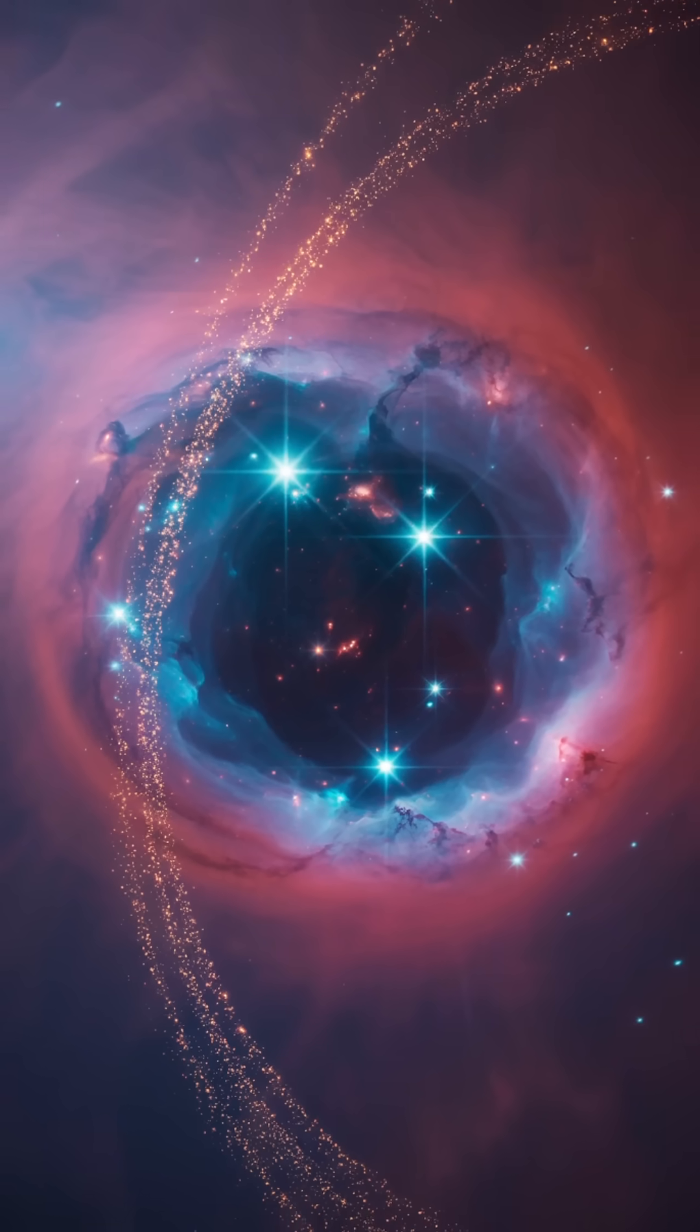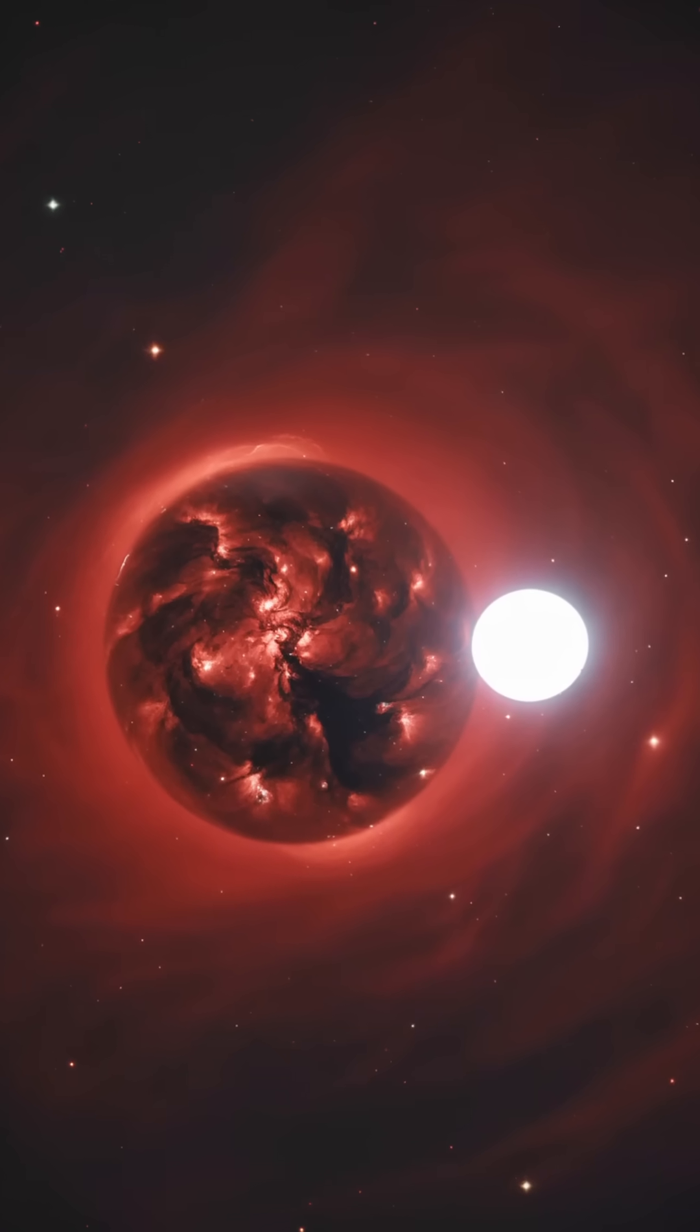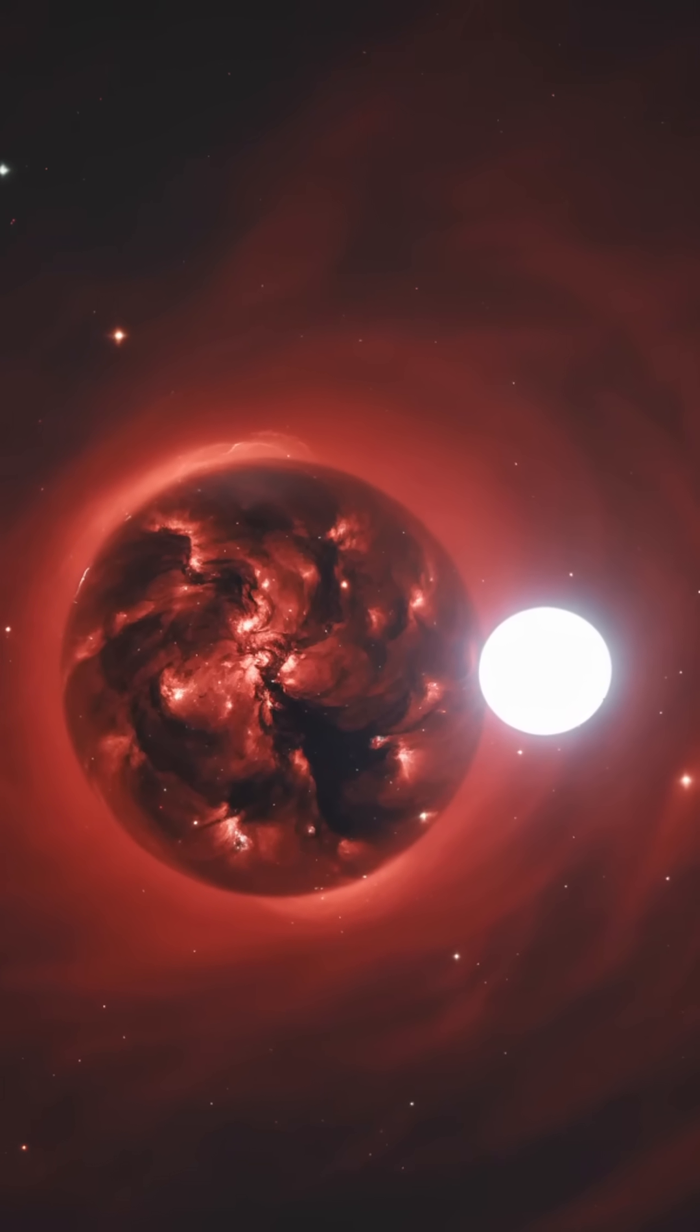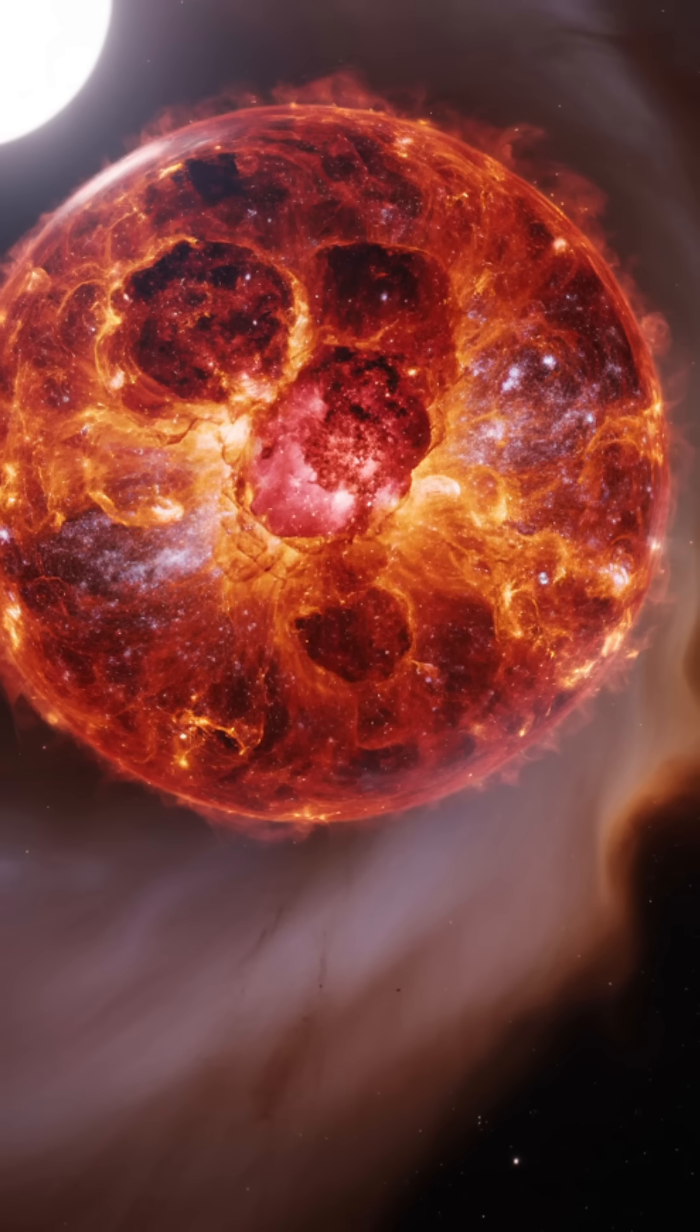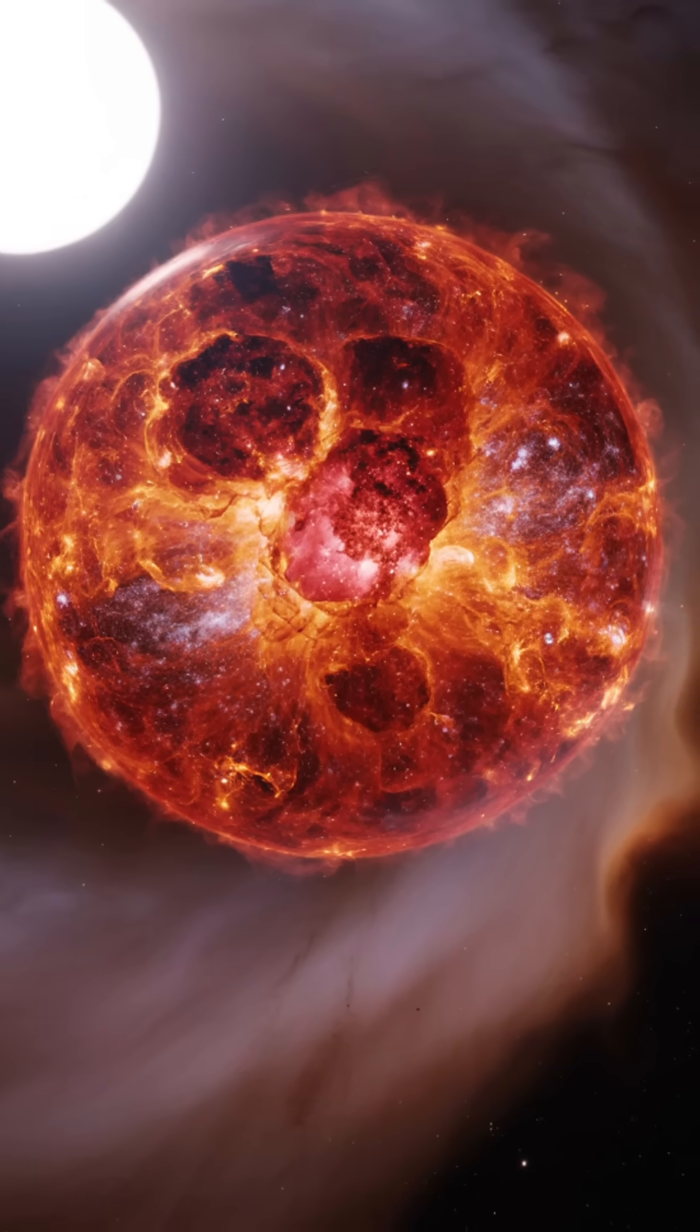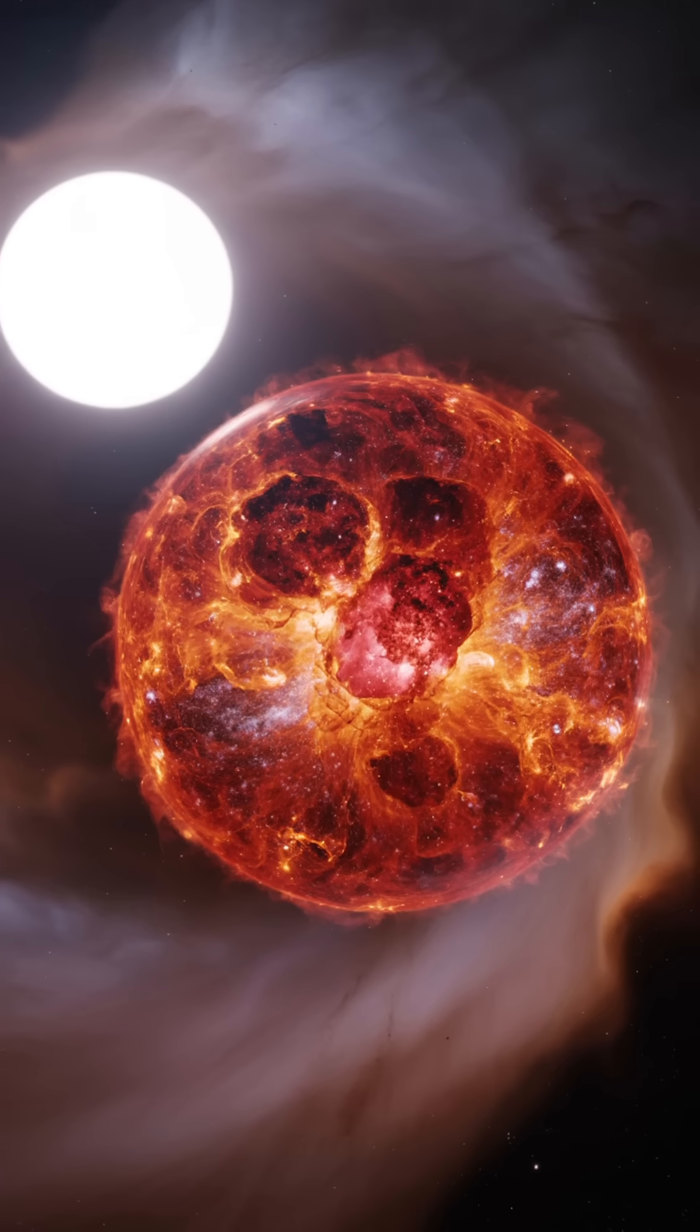If the collapsing core is between about one, four and three times the mass of the sun, it becomes a neutron star, an ultra-dense object packed so tightly that atoms collapse, leaving a sphere of neutrons just 20 kilometers wide, spinning rapidly and sometimes emitting beams of radiation like cosmic lighthouses called pulsars.